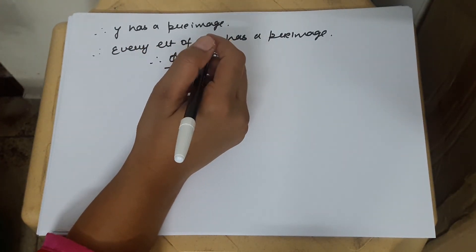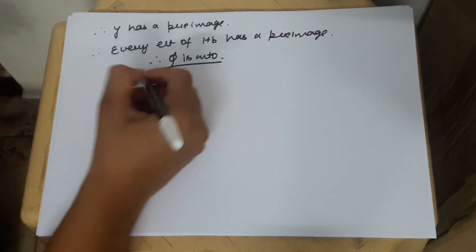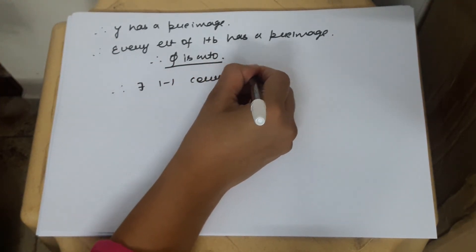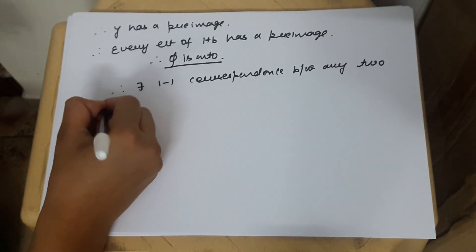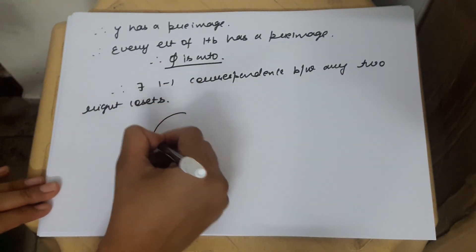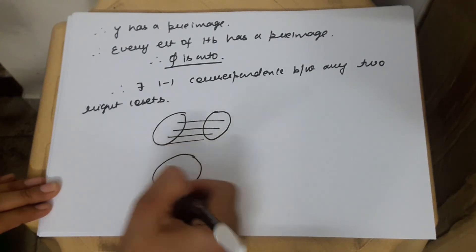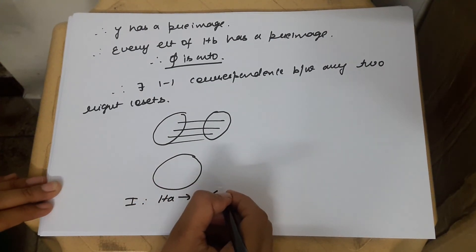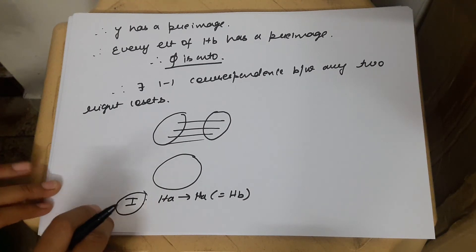Combining all cases, phi is a well-defined function that is both one-one and onto. Therefore, there exists a one-to-one correspondence between any two right cosets. If two cosets are disjoint, there is still a one-to-one correspondence. If two cosets are identical, that is simply an identity mapping from Ha to Ha, and the identity mapping is always a one-to-one mapping since it is both one-one and onto.